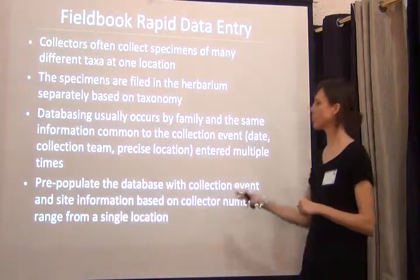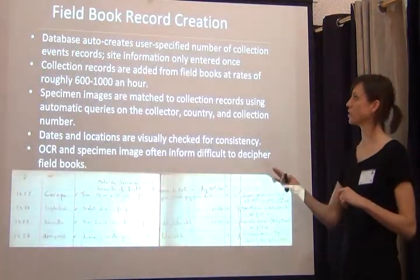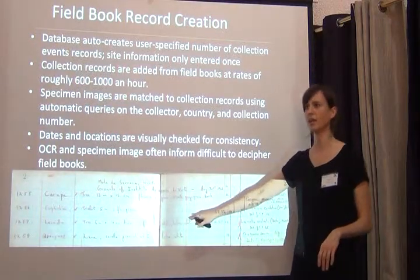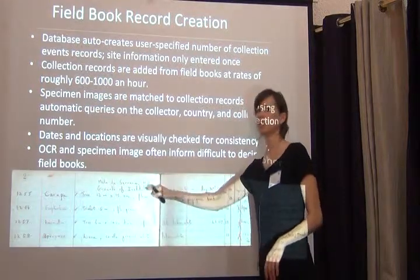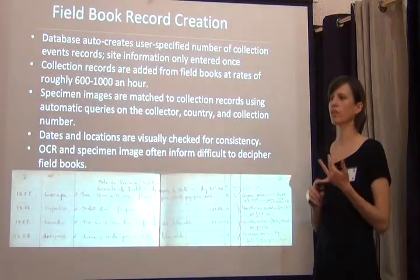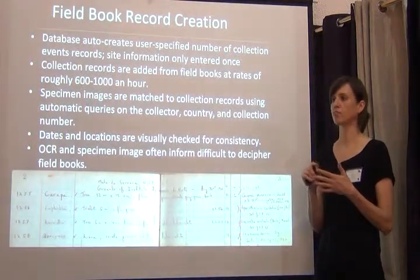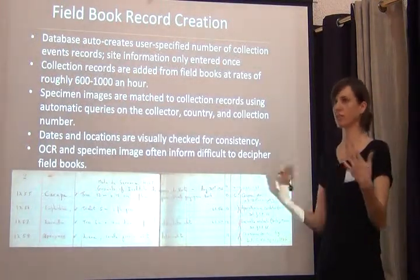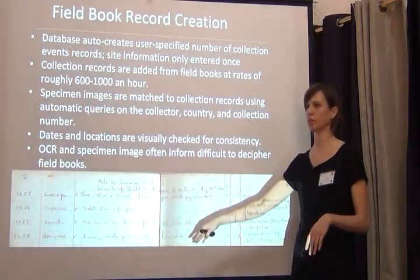So what we did was pre-populate the database with the collection event and site information from the field books — starting with the field books instead of the specimens. Each field book page, often at the top, gives you the location and then a list of all the specific collection numbers from that one location. We could enter the location record once, the collector once, the date once, and say collection numbers 1,000 to 1,020 are all at the same exact location. At that point we weren't worried about the names or determinations — we ignored them.